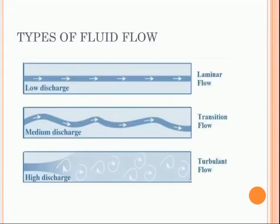Generally there are three types of fluid flow. First, we have laminar flow — the type of flow in which the particles move in a straight line in the form of thin parallel sheets. The type of flow in which the particles move in a zigzag pattern is known as turbulent flow. Transitional flow is when the flow changes from laminar to turbulent or vice versa, and certain disturbances are created.